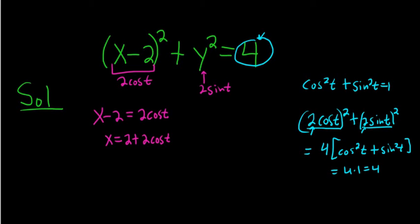And then here, y is simply 2 sine t. And you can convince yourself, if you replace this with this, the same thing is going to happen as it did over here. And we'll end up with 4, right, because this becomes 2 sine t squared, and you get 4 times 1, which is 4.